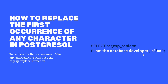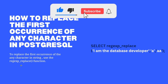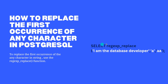To replace the first occurrence of any character in a string, use the regexp_replace (regular expression replace) function of PostgreSQL. The syntax is: after SELECT, specify regexp_replace, which accepts three parameters — source string, old string, and new string. For example, using the string 'I am the database developer', replacing letter 'a' with double letter 'aa'. There are four occurrences of 'a' in that string, but this function will replace only the first one.